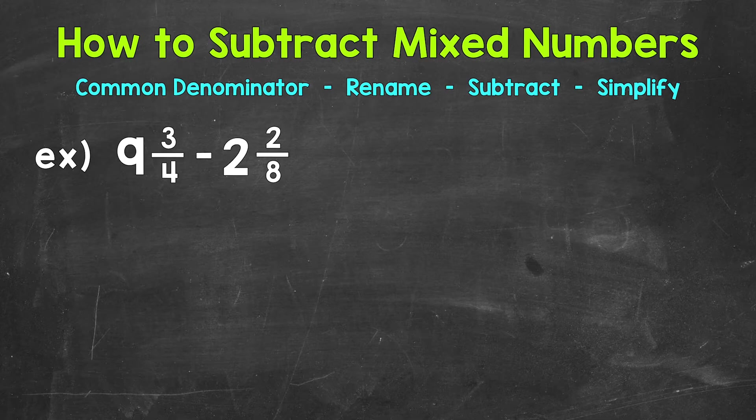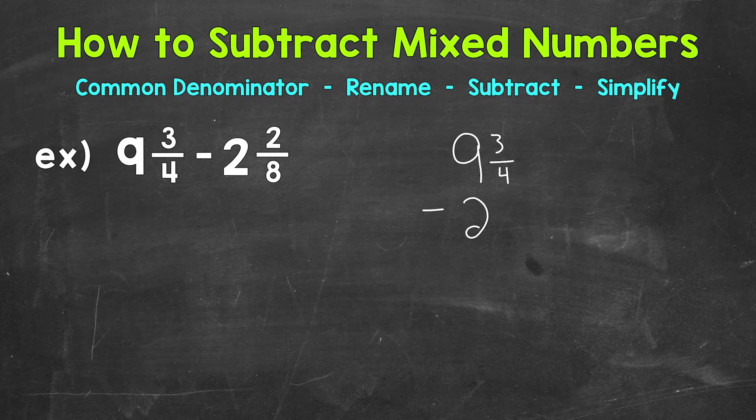Let's jump into our example where we have 9 and 3 fourths minus 2 and 2 eighths. Now the first thing that I'm going to do is rewrite this problem vertically, so up and down, and I'm going to line up my whole numbers and fractions. So let's come to the side here and we'll do 9 and 3 fourths minus 2 and 2 eighths.